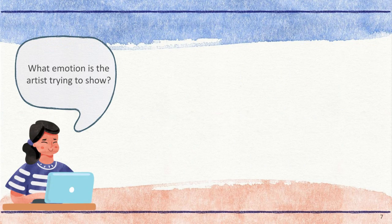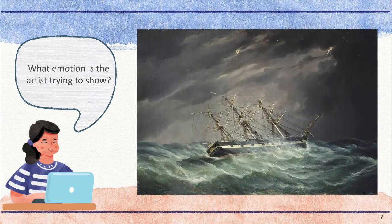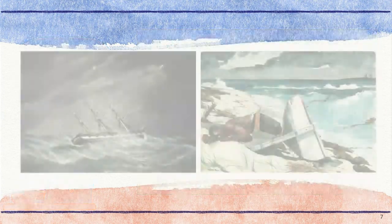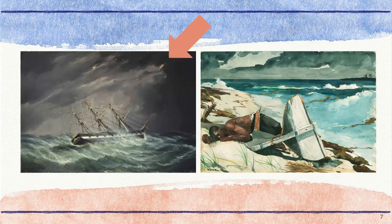So one way we can read art is by looking closely at the details and thinking about what they show us. Another way we can read art is by thinking about what emotions the artist is trying to show. For example, I think that this artist is trying to show how scary a hurricane could be. This piece of art, on the other hand, makes me feel relief that the man survived. Even their colors are different — this one is dark and scary, while this one looks like the darkness has moved off and now the sun is coming out.